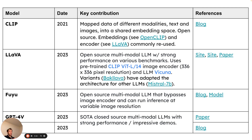Fuyu is another one that came out this year with an interesting architecture — it bypasses the image encoder and can run at variable resolution; that's from Adept. And of course GPT-4V, and most recently Gemini from Google. These are state-of-the-art closed source multimodal LLMs with very strong performance, impressive demos, available through APIs. That's the landscape — there are indeed more models; this is just a short overview with some links.